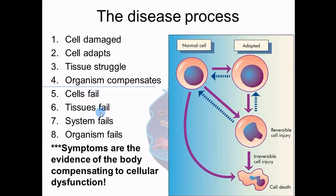Symptoms are signs of these things happening — first signs that cells are adapting, then signs that the cell didn't adapt. Through this process you see changes like hair falling out, nails becoming brittle, skin sloughing off. At the point of cell failure, you start seeing necrosis. We'll talk about necrosis with cell death, tissue death, systems dying, and the organism dying. But there's a process, and that's what you need to be familiar with.